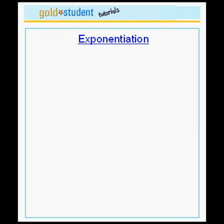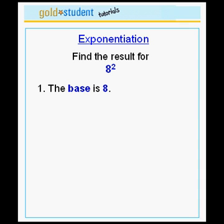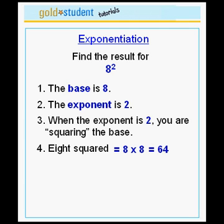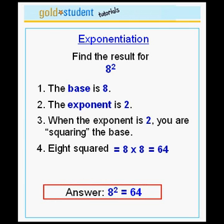Let's do another example. Let's find the result for 8 to the power 2. The base here is 8 and the exponent is again 2. We are again squaring the base. 8 squared is then 8 times 8, which is equal to 64. Therefore, 8 to the power 2, or 8 squared, is equal to 64.